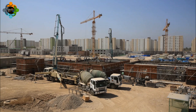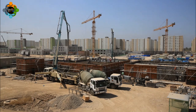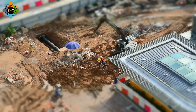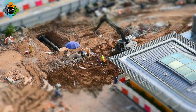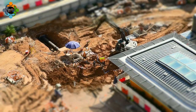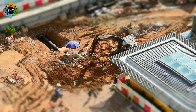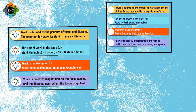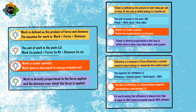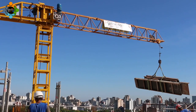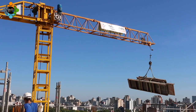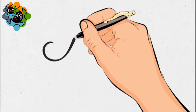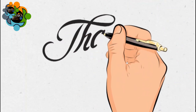Today we have explored the concept of work, power, efficiency, and Sankey diagrams using the crane as our example. We've understood how work is the transfer of energy, power quantifies work over time, and efficiency is the key to optimizing output. So the next time you see a crane in action, appreciate the physics behind it.